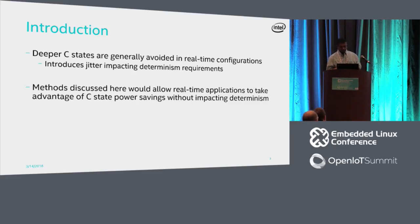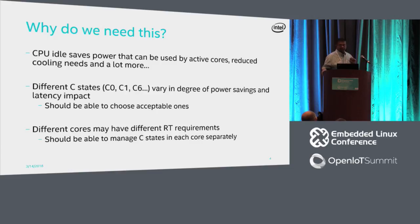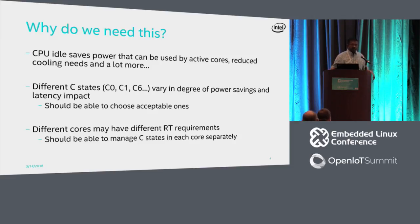There are several advantages of power saving. One thing we should note is we should try to avoid the all-or-nothing approach. There are several flavors of C-states available with different levels of latency impact, so we should be able to dynamically choose the ones we can use and disable some that may be problematic. In a system, several cores may not all be running real-time applications — some may be running graphics or other non-real-time tasks — but we don't want to disable C-states system-wide. We should be able to control it individually per core.